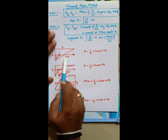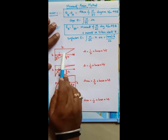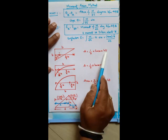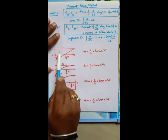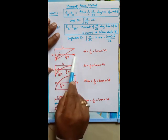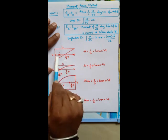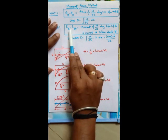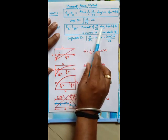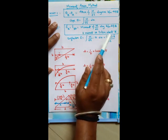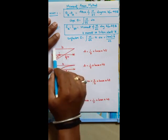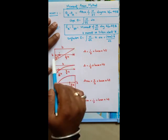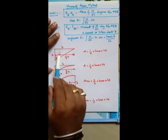For a cantilever beam subjected to a point load, the bending moment diagram is a triangle. The area of this triangle is (1/2) × base × height. The centroid (CG) of this triangle is located at one-third of the base from the maximum and two-thirds from the minimum. The CG location is required because in moment area theorem 2, when calculating deflection, the moment of the M/EI diagram is taken about a point, and the entire area is assumed to act at the CG of the figure.